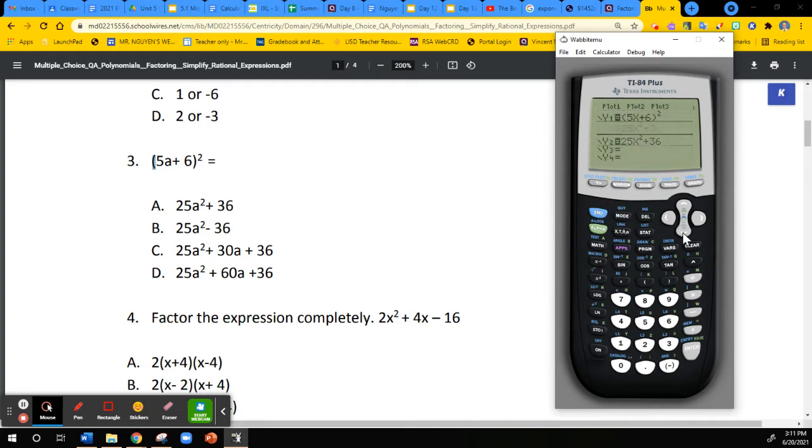Our conclusion is choice A is different than the given problem. So, choice A is not the answer. We go back to y equals. We are going to clear out y2 and test b. Well, I have a feeling b is going to be wrong also because choice A and choice B are very similar except one is plus 36 and one is minus 36. You can make that judgment for yourself or if you have time, which you should, you have plenty of time on the star test. 25x squared minus 36, I am going to look at the table. I have a feeling it is not the same. Yeah, I was right.